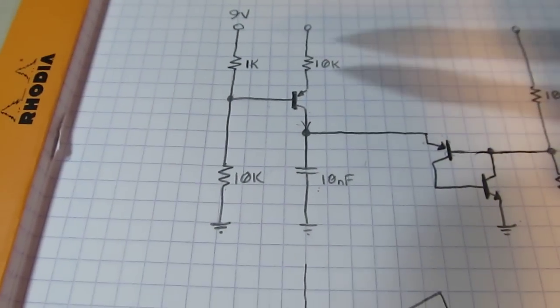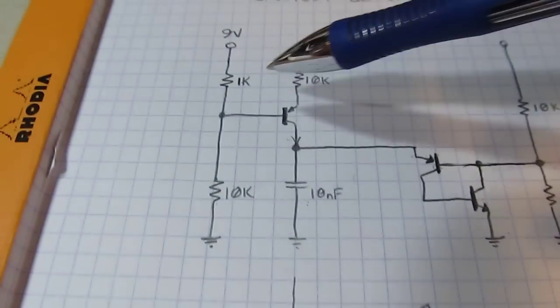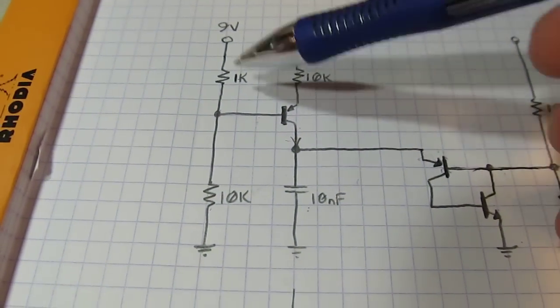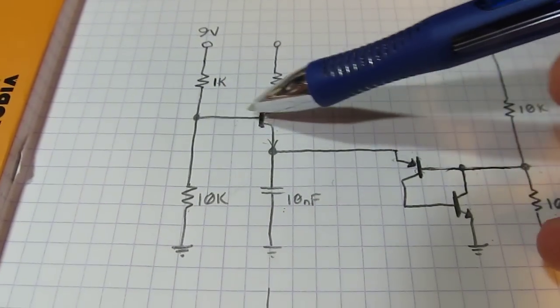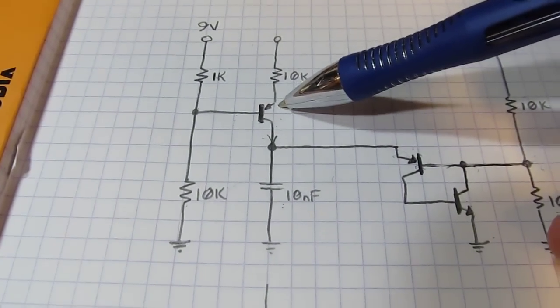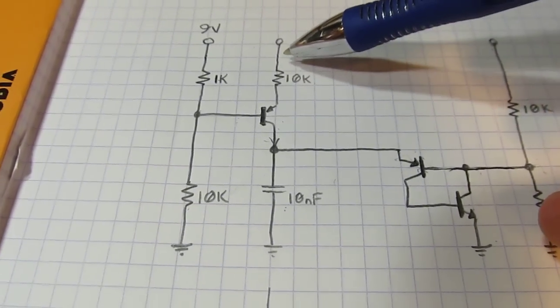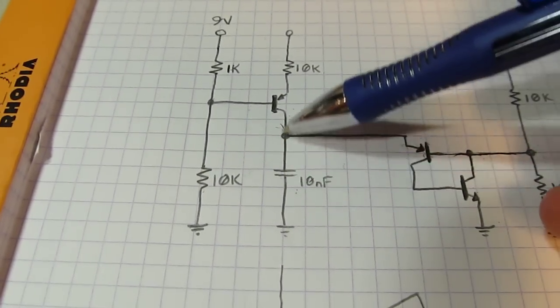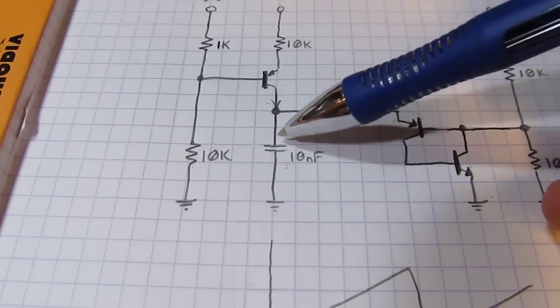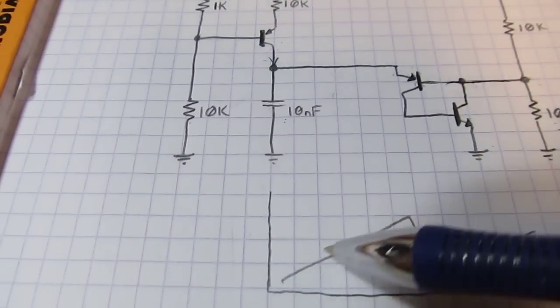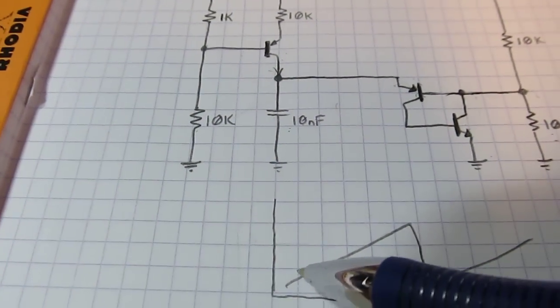So the way this is working is we're setting up the long ramp of the sawtooth using a current source with these components here. These two resistors set up a bias voltage on this PNP transistor, putting about 300 millivolts or so across this resistor here, giving me about 30 microamps of continuous current source flowing out of that collector. And that dumping into this 10 nanofarad capacitor gives me a linear voltage ramp. So that's how we get that part of it.